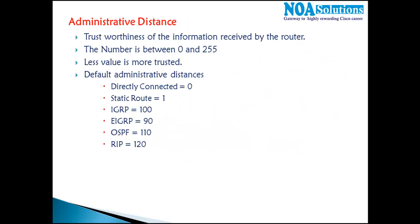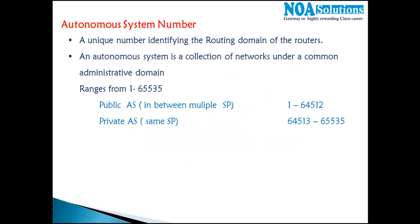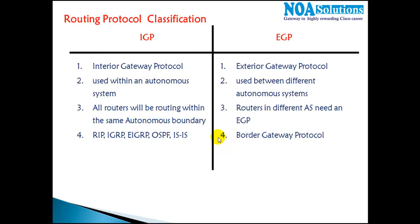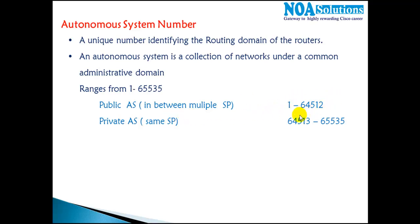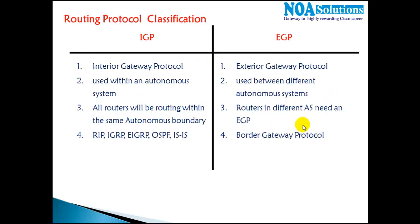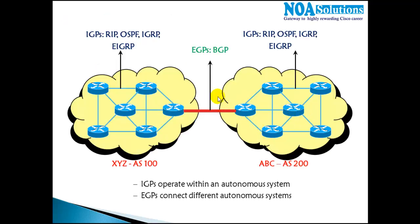To quickly revise: the autonomous system number identifies one organization, with numbers given within the public and private AS ranges. IGP stands for interior gateway protocol, which allows communication within the same autonomous system. For inter-AS communication between two different autonomous systems, we use exterior gateway protocol, and the only EGP running on the internet today is BGP.